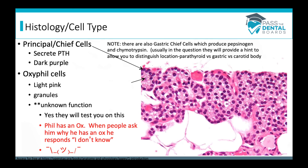For the histology, there are two main cells: the principal or chief cells, and the oxyphil cells. The principal or chief cells are the ones secreting parathyroid hormone — if you look here, they're the ones that are deep and dark purple. You've probably seen chief cells come up before: they're in the stomach as gastric chief cells, which secrete pepsinogen and chymotrypsin, and there are also chief cells in the carotid body. Questions will usually distinguish based on location to hint at which type of chief cell they're referring to.